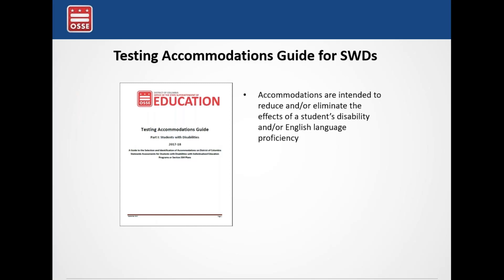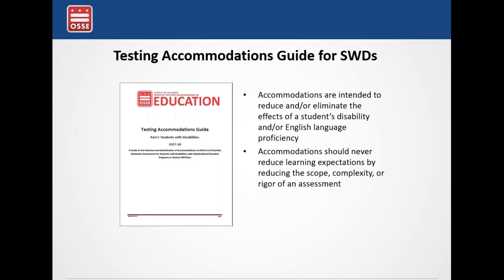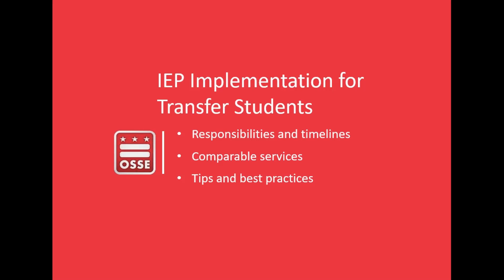Accommodations for students with disabilities or English learners are intended to reduce or eliminate the effects of the student's disability or English language proficiency on their ability to perform on the test. These accommodations do not change the bar or expectation — they don't reduce the learning expectation, the scope or number of items, the complexity of items, or the rigor of the assessment. It is a requirement that students who will receive accommodations on the test use them in daily instruction, and it's very important for students to be familiar with the accommodation before using it during the assessment.